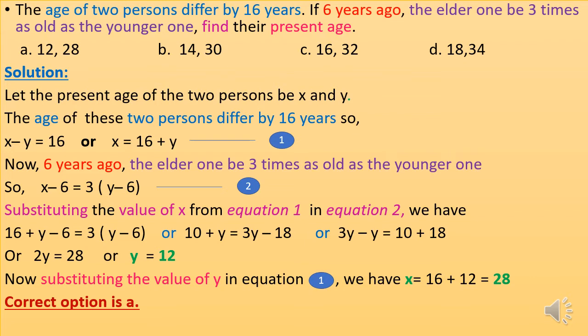Six years ago, the elder one was three times as old as the younger one. Six years back, their ages would be x minus 6 and y minus 6. So: x minus 6 equals 3 times (y minus 6). This is equation two.